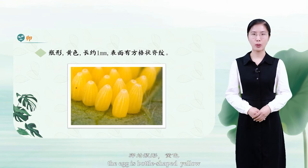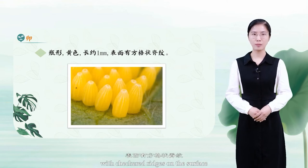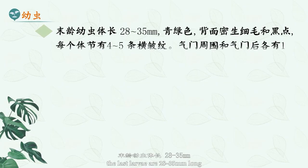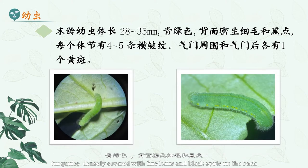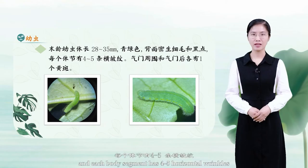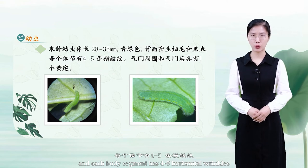The egg is bottle-shaped and yellow, about one millimeter long, with checkered ridges on the surface. The final instar larvae are 28 to 35 millimeters long, turquoise, densely covered with fine hairs and black spots on the back, and each body segment has four to five horizontal wrinkles.